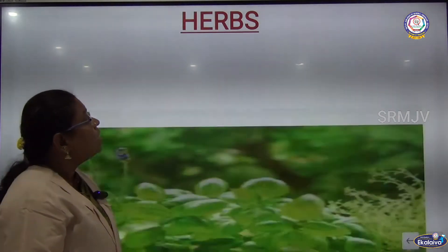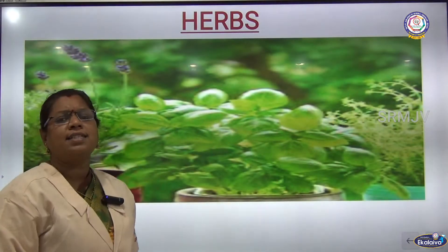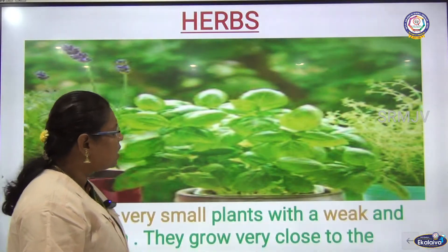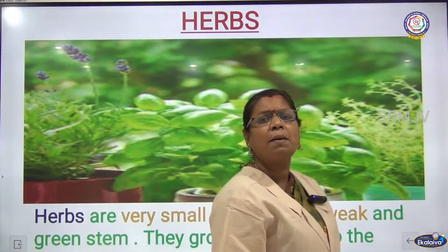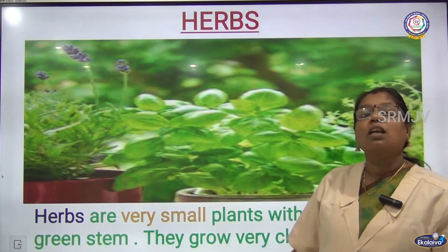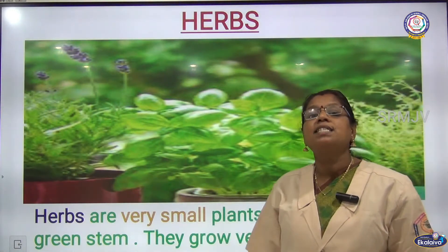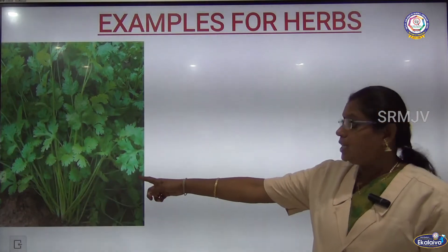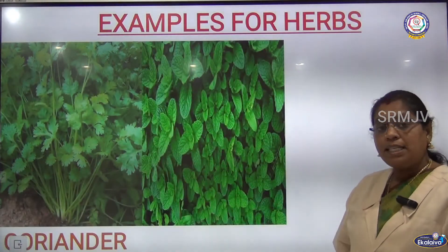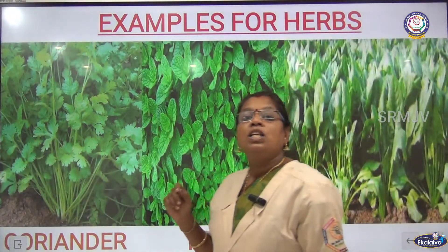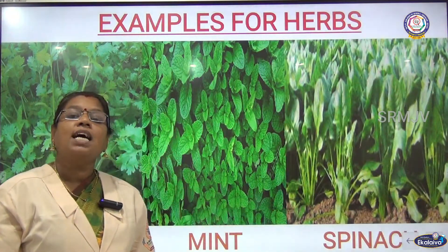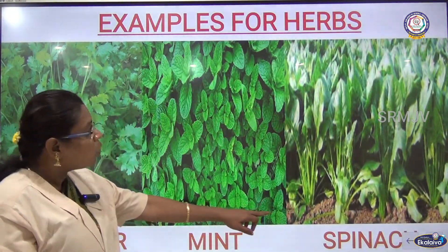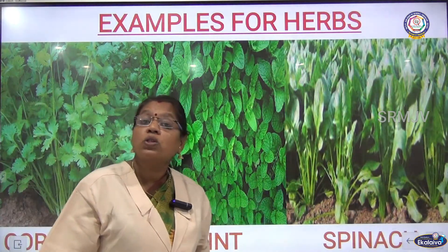Next are the herbs. Herbs are very small and weak plants that grow close to the ground. Examples of herbs are coriander, mint and spinach — they all grow very close to the ground.